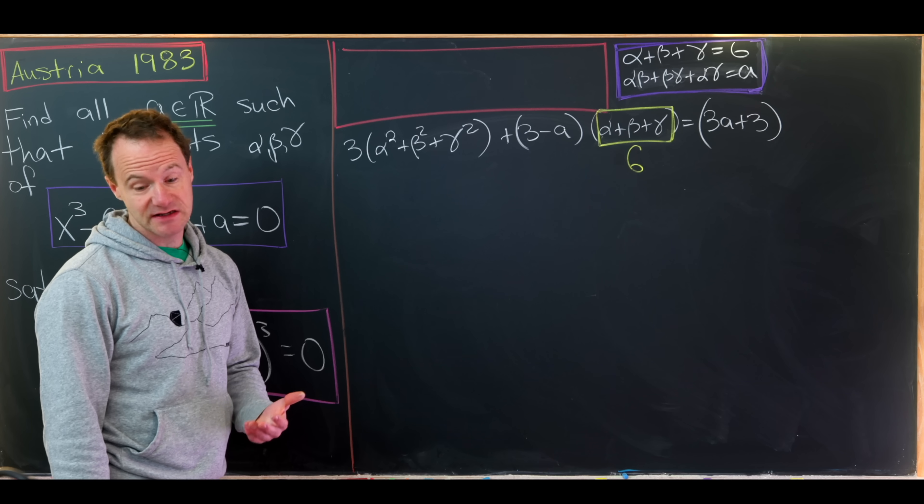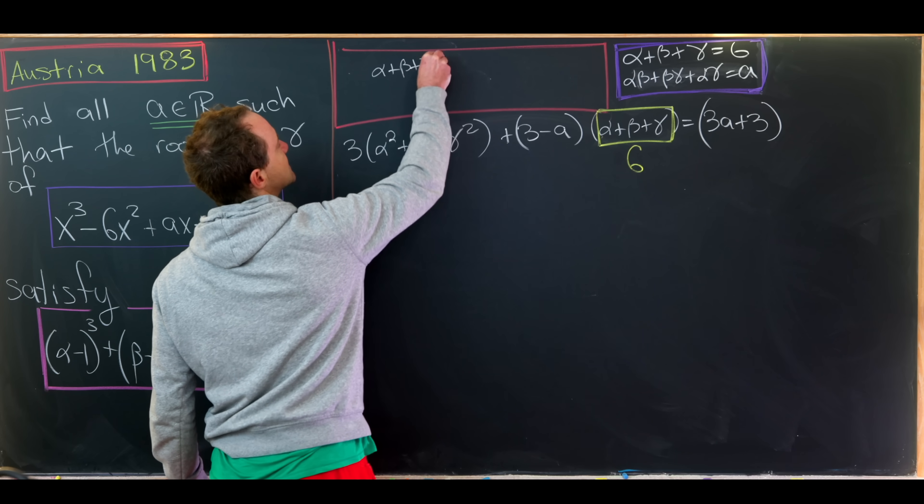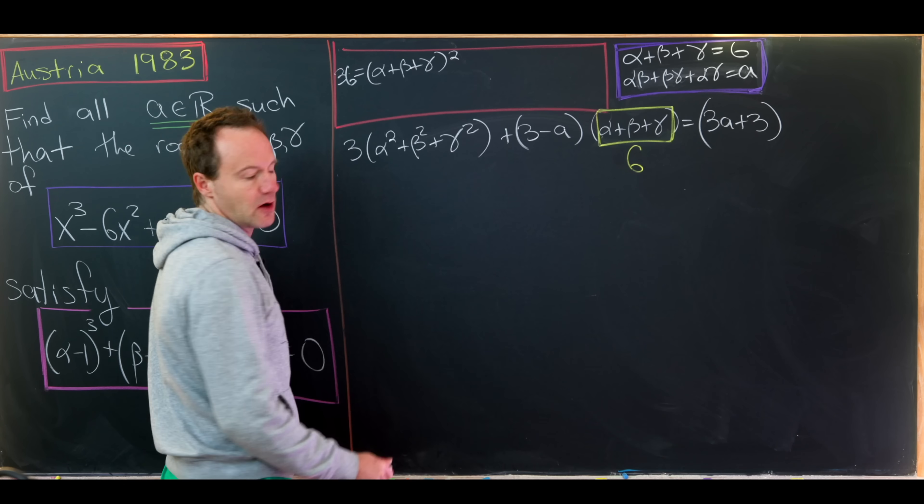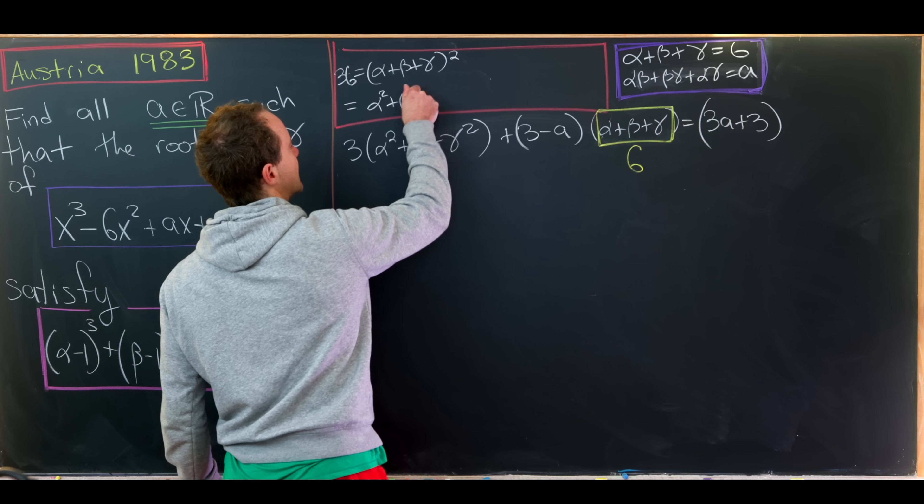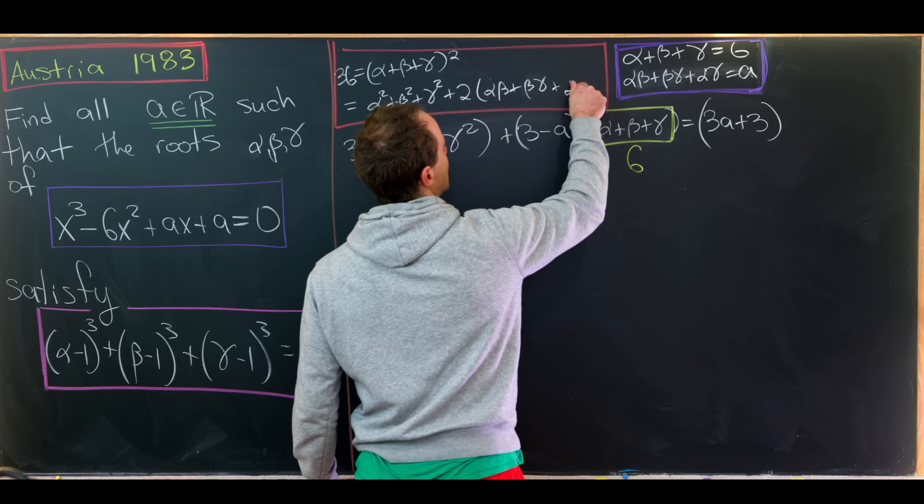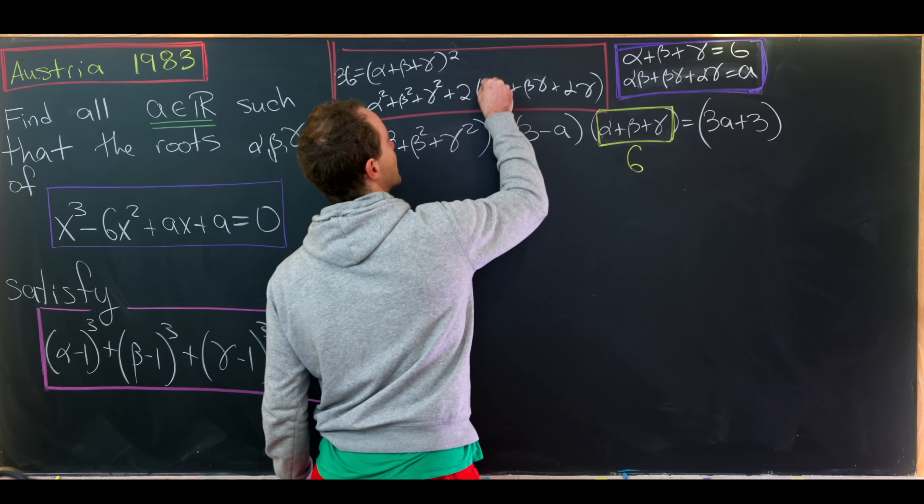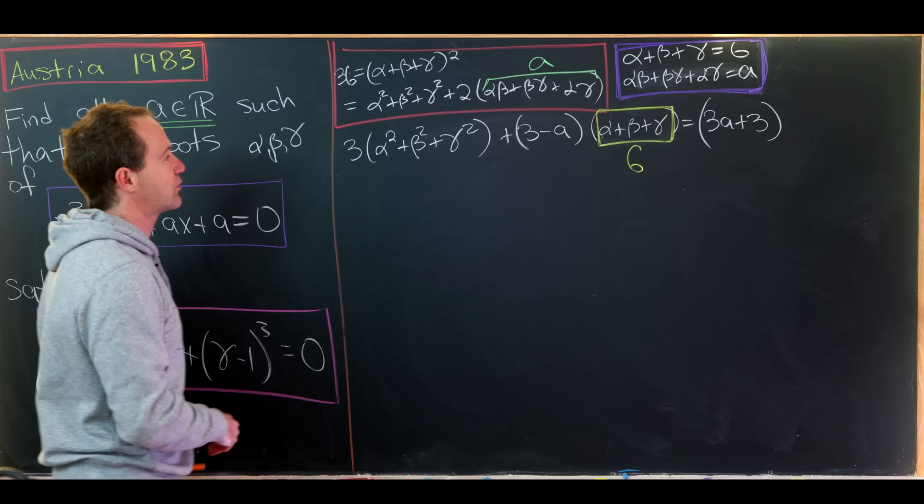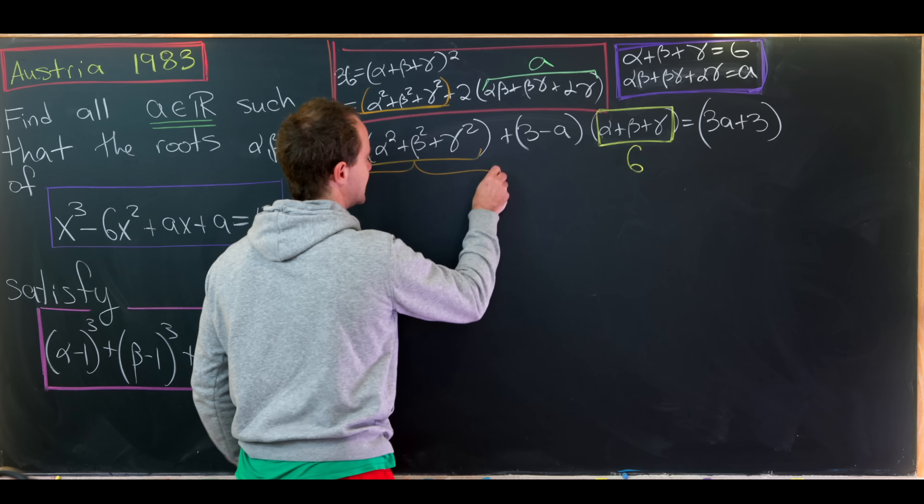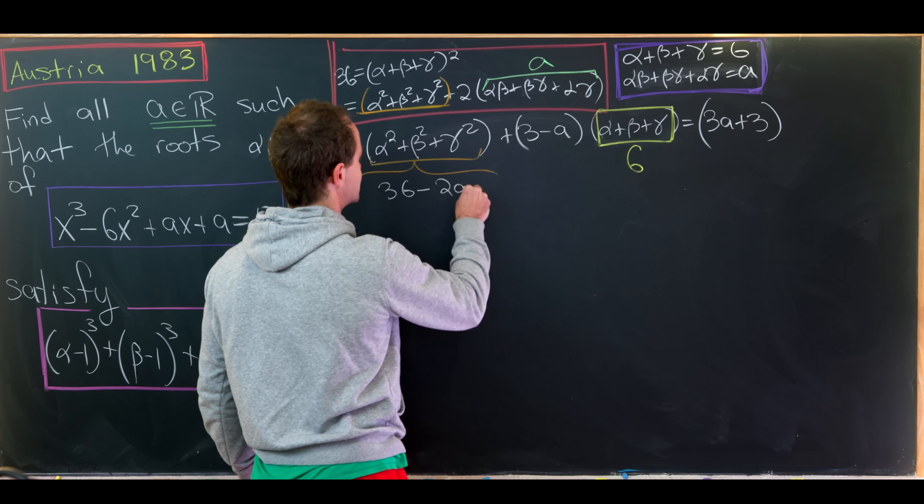Now we'd like to somehow use a combination of those two equations to replace this alpha squared plus beta squared plus gamma squared. And in fact, it's not so tricky. So what we'll start by is looking at alpha plus beta plus gamma quantity squared, which we know to be 6 squared, which is 36. But now multiplying that out, we'll get alpha squared plus beta squared plus gamma squared plus 2 times alpha beta plus beta gamma plus alpha gamma. So again, that's just by multiplying that out. But let's notice that this sum of the quadratics is exactly equal to our number a. So this gives us a pretty nice equation that we can use to solve for this sum of the squares. That means we can replace this sum of squares with the following object: 36 minus 2 times a.